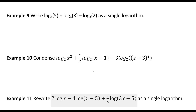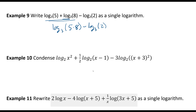So we have: write log base 3 of 5 plus log base 3 of 8 minus log base 3 of 2 as a single logarithm. The first two terms are added, so that becomes log base 3 of 5 times 8, minus log base 3 of 2. And with that difference, it becomes a division.